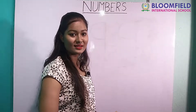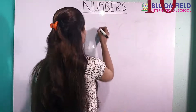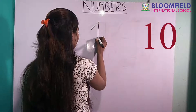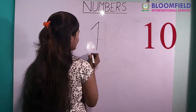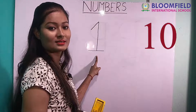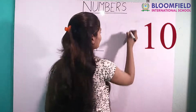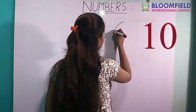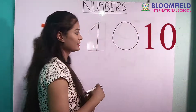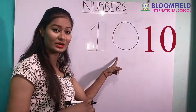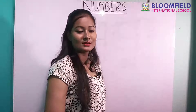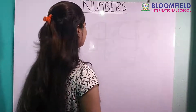Next: one zero — ten. Slanting line, one standing line, then small slipping line. One. Circle — it means zero. One zero. Ten. So next, good.